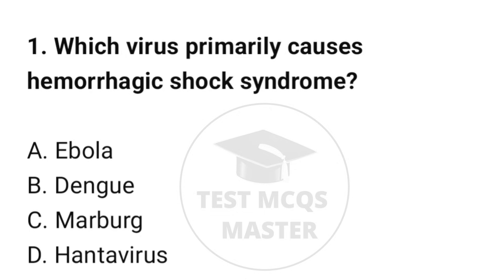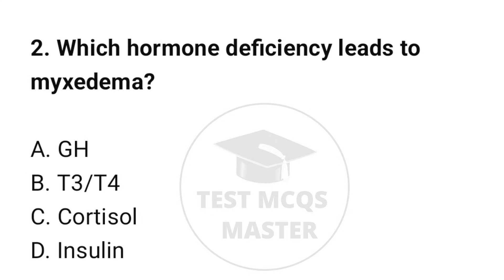Question number 1: Which virus primarily causes hemorrhagic shock syndrome? The correct option is B: Dengue. Question number 2: Which hormone deficiency leads to myxedema? The correct option is B: T3 or T4.